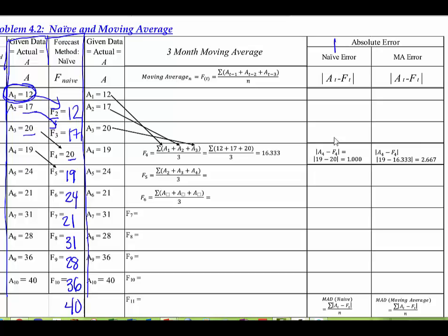Right here is where we would find the naive error. What we're doing is calculating the absolute difference between the actual and the forecasted amount. So in period 2, we want to take the absolute value of A2 minus F2, which in this case is 17 minus 12, so it's going to be 5. And then we'll do the same thing again in period 3 — the absolute value of A3 minus F3, which is 20 minus 17, which is equal to 3.